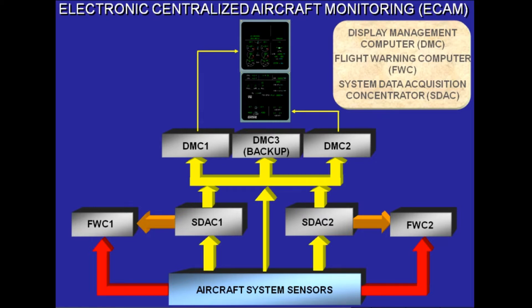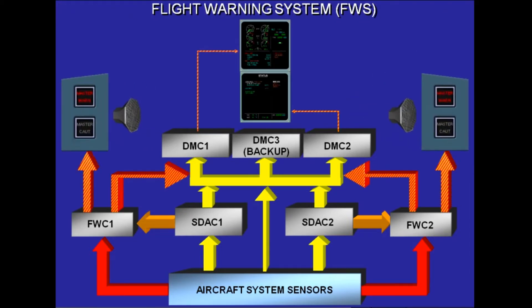The flight warning computers, FWCs, the heart of the ECAM system, receive data from the aircraft systems to generate red warnings, and from the SDACs to generate amber cautions. The FWCs then supply the DMCs for the display of alert messages, the attention getters, and the loudspeakers with oral alerts and signals, as well as synthetic voice messages.